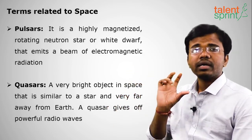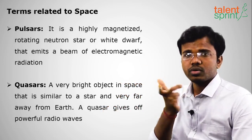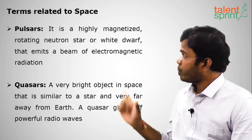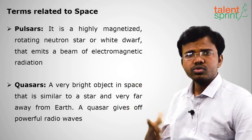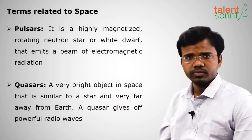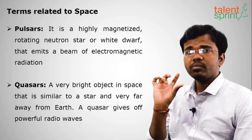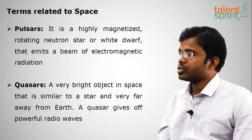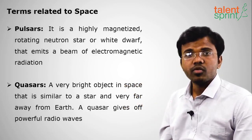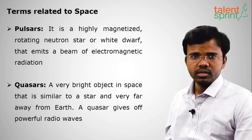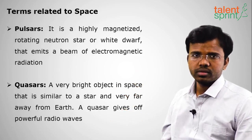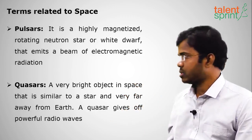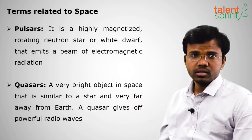A pulsar is a highly magnetized neutron star that keeps rotating. Neutron means it has no charge — neither positive nor negative. A pulsar emits beams of electromagnetic radiation such as ultraviolet rays, radio waves, microwaves, gamma rays, or visible light. These emitted beams are called pulses.